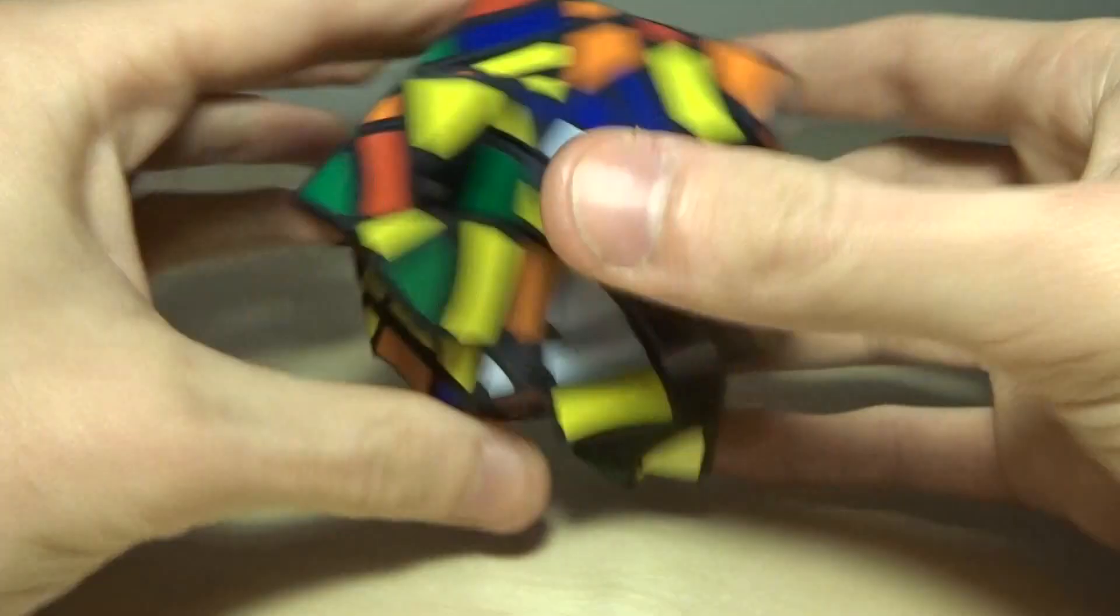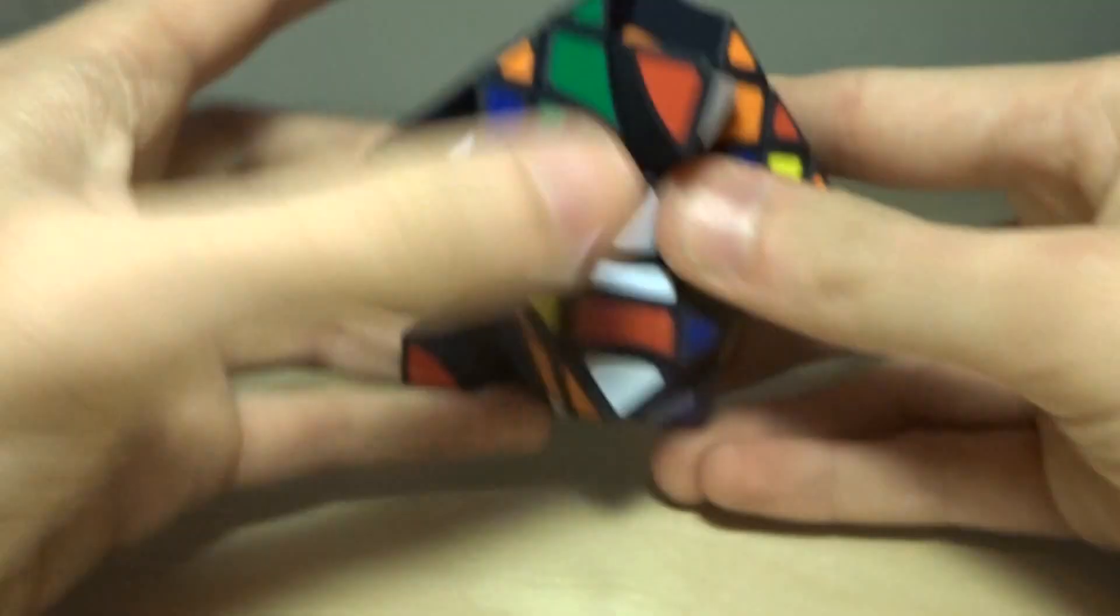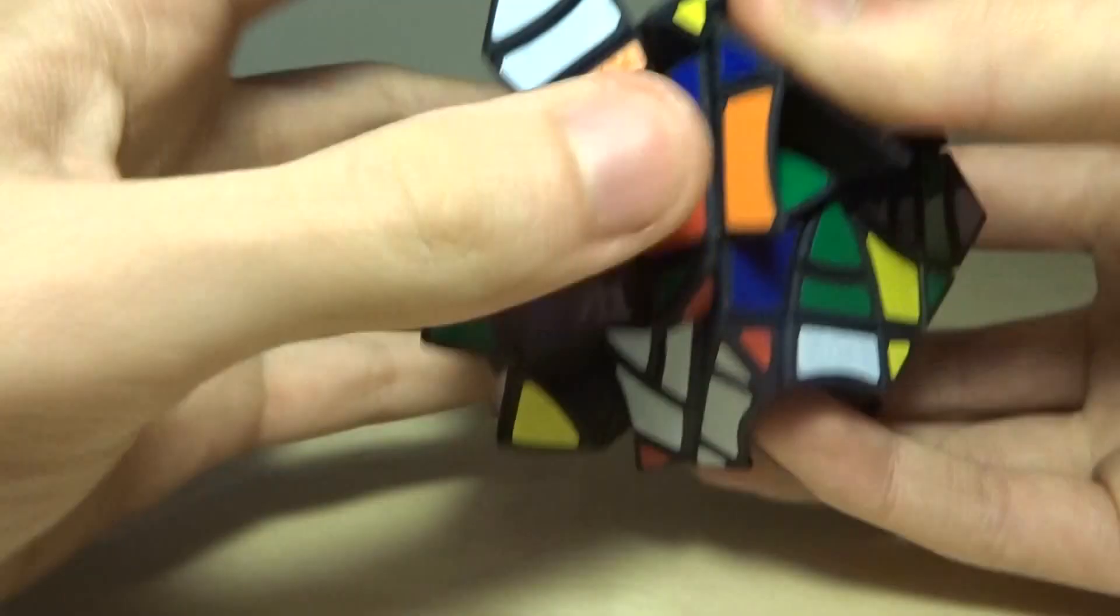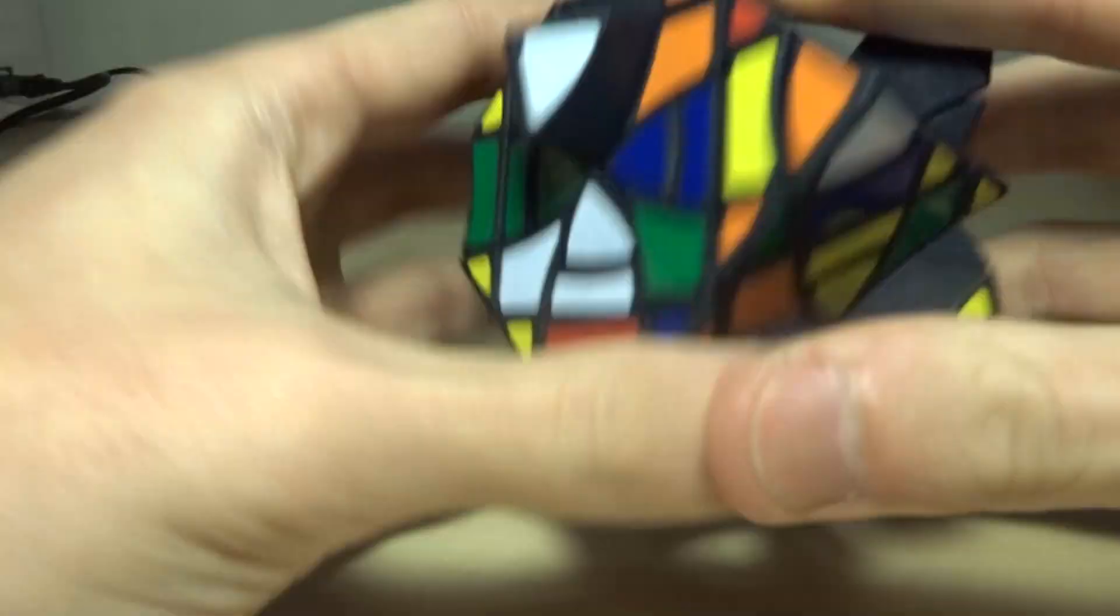So, this is what it looks like after some normal Curvy Copter jumbles. And now I guess I can start doing some skew moves and some skew jumbling. Just like that. As you can see, these trapezia are starting to form.